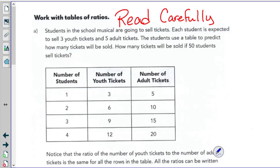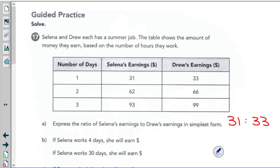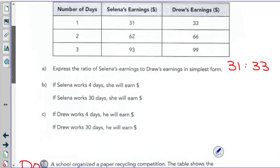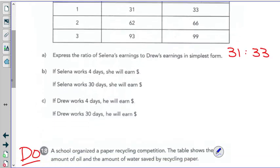So read that page carefully. Number 17. Selena and Drew each have a summer job. The table shows the amount of money that they earn based on the number of hours that they worked. Express the ratio of Selena to Drew's earnings in simplest form. It's 31 to 33.